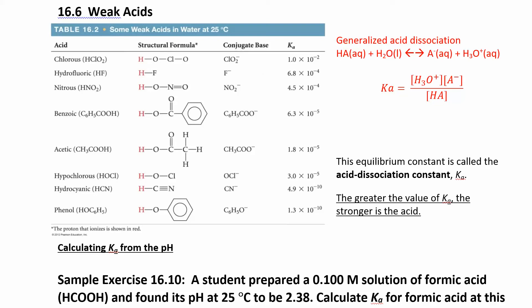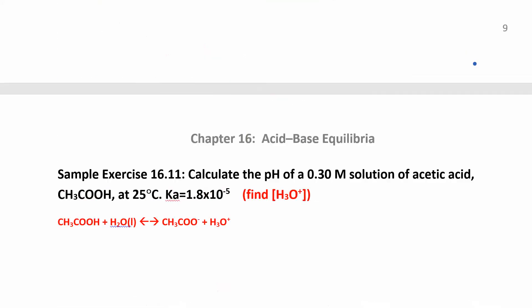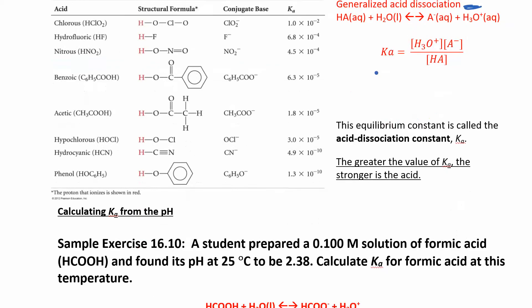If you don't want to write out every individual acid, you can use the generalized acid ionization equation where HA just means an acid — a monoprotic acid — with hydrogen out in front. It dissociates into A⁻ and you always make hydronium. Whenever you have an acid in water, hydronium is one of your products. You can then write the Ka expression — remember, you don't put water in because water is a liquid.